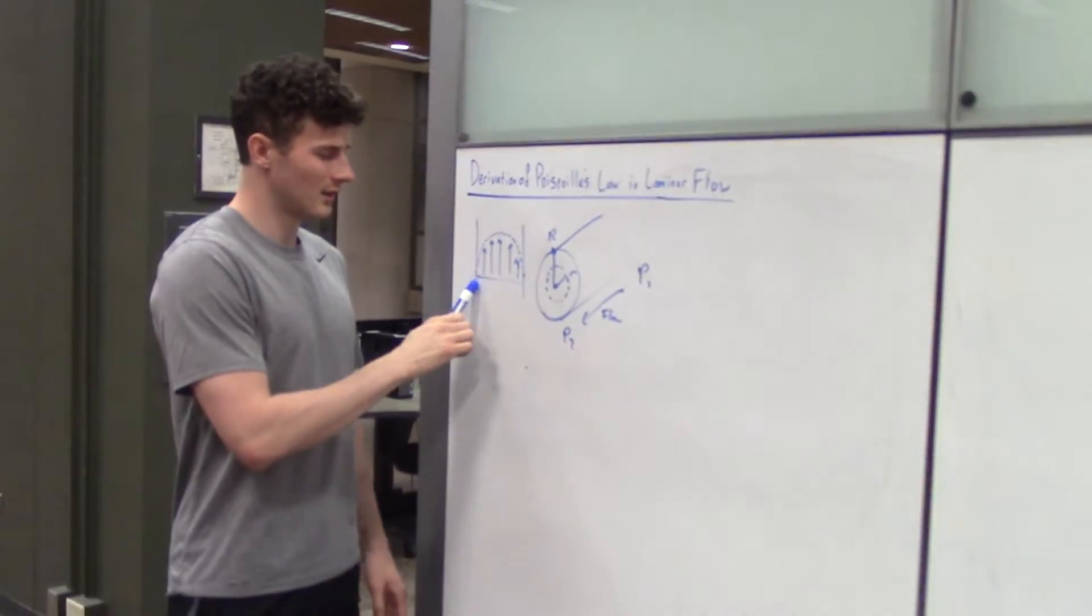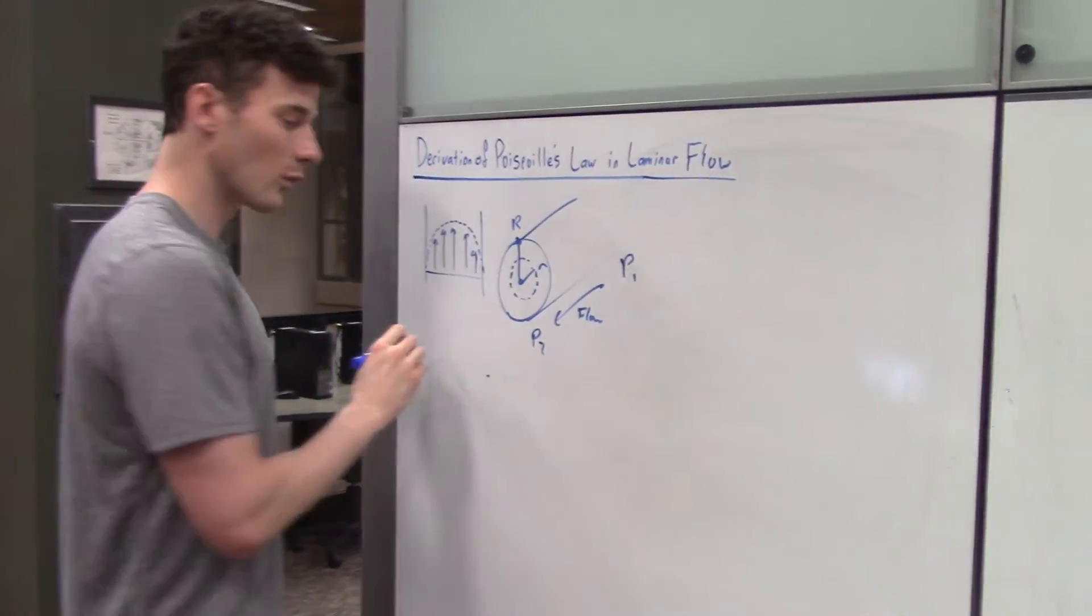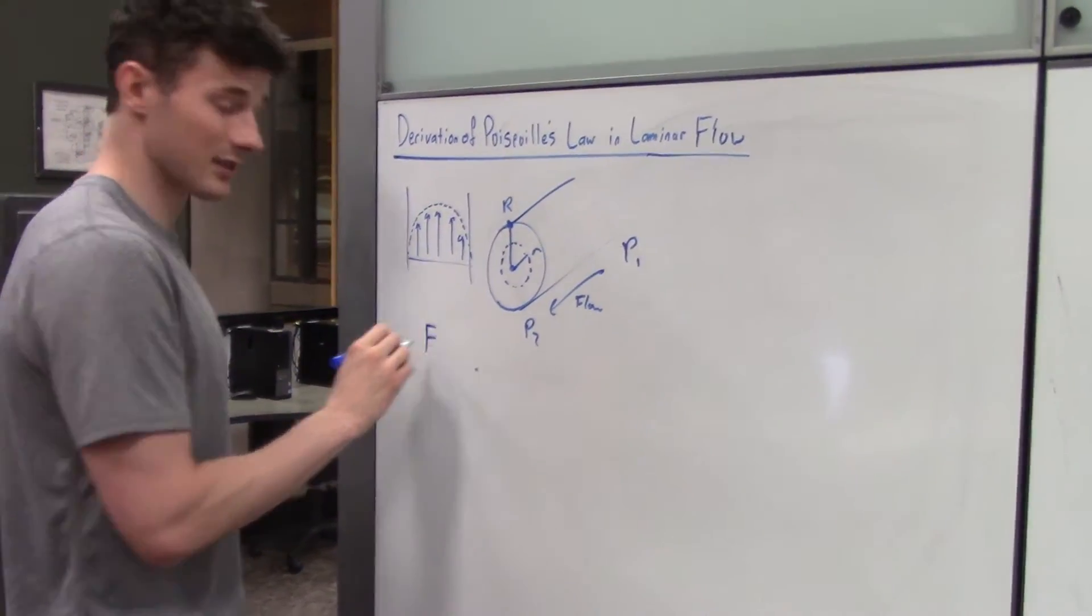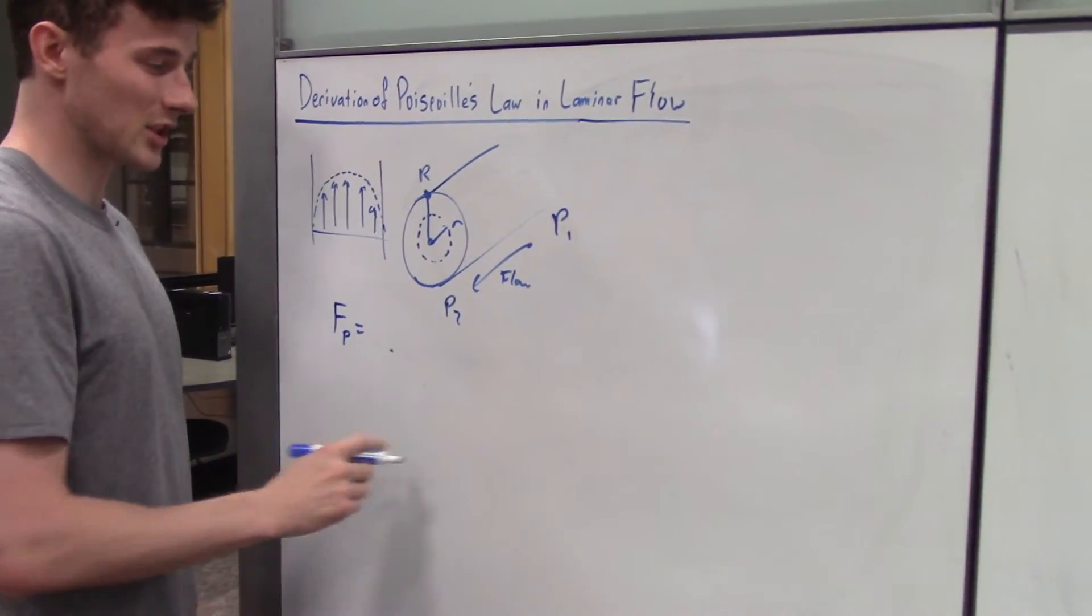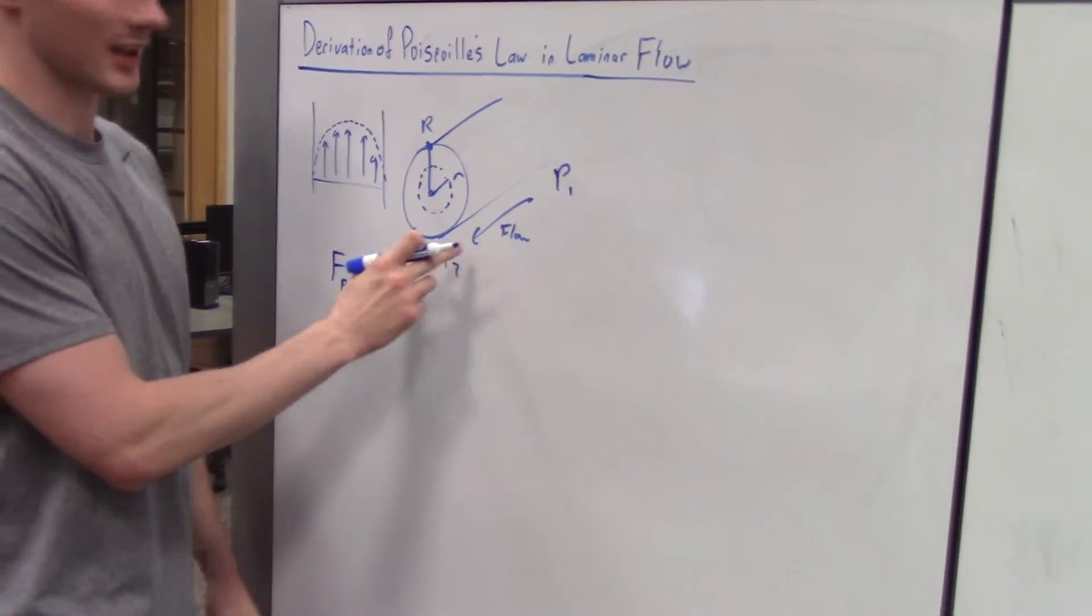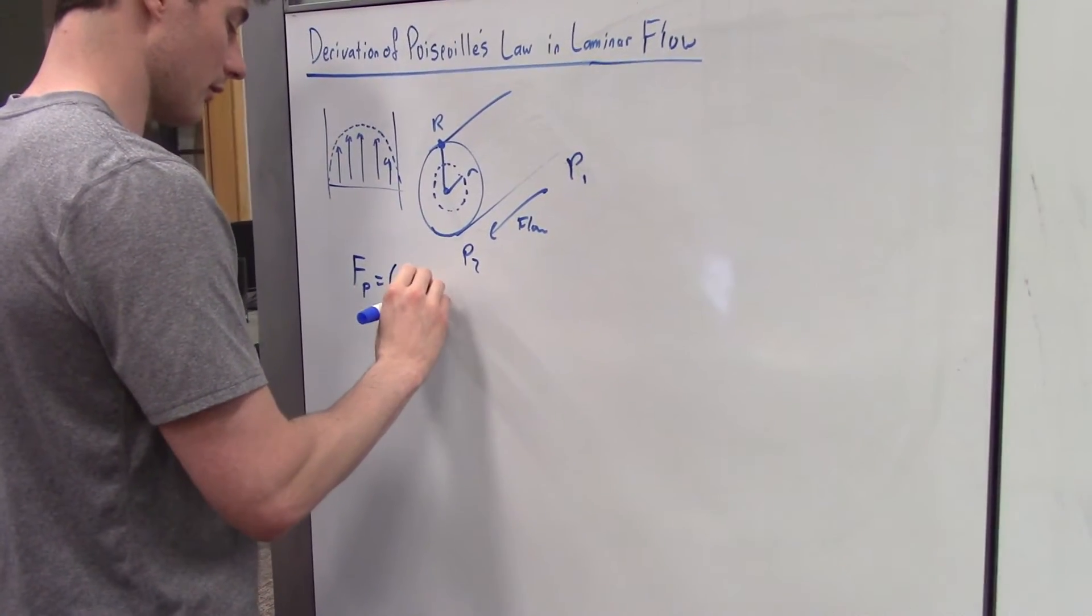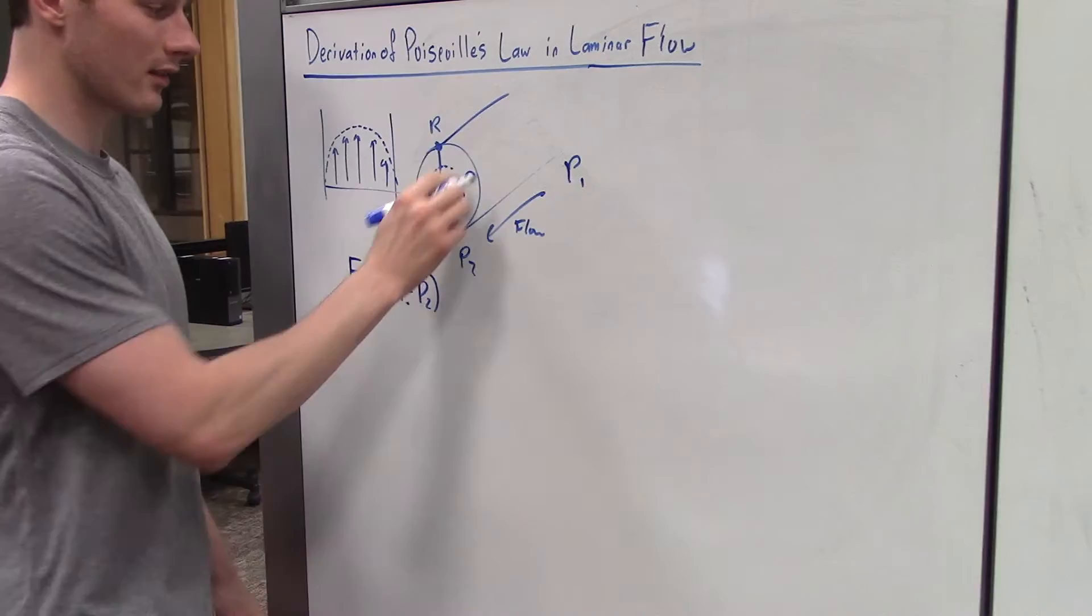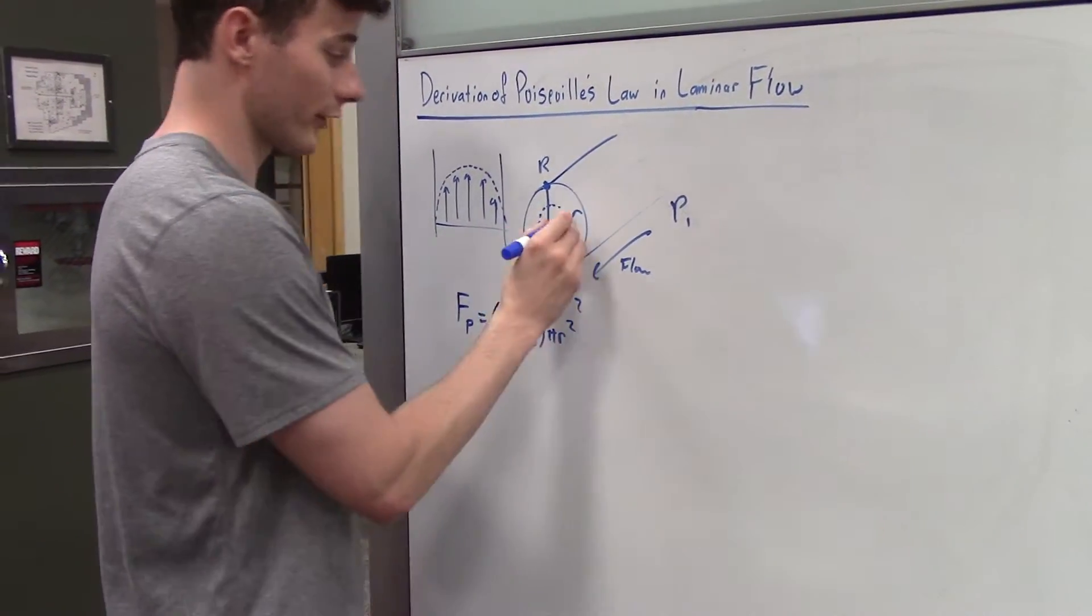The velocity profile in laminar flow is a parabola, and what causes that flow is a force called the pushing force. That's going to be equal to the difference in pressure times the area, so P1 minus P2, and then the area of this, pi R squared.